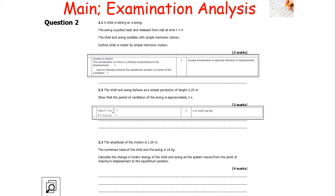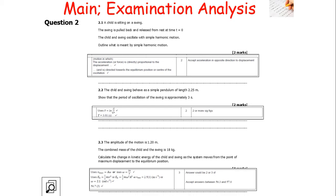The amplitude of motion is 1.20 metres and the combined mass of child and swing is 18 kg. We need to calculate the change in kinetic energy as the system moves from maximum displacement to the equilibrium position. We use V = Aω for V_max, which is the velocity at the equilibrium position, then KE = ½mv². At the maximum displacement, the velocity is zero, so we use the angular velocity at that point. We work out the difference between the two kinetic energy values.